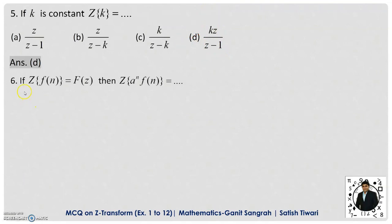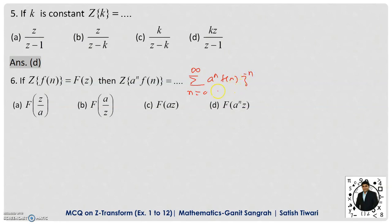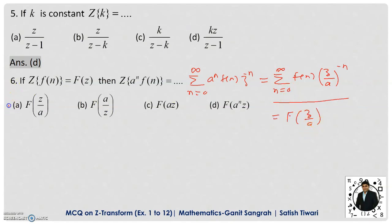Question 6: If Z{f(n)} = F(Z), then Z{A^n · f(n)} is given by — this is a very important formula called the change of scale property, also called the damping rule. By definition, Z{A^n · f(n)} = summation from n=0 to infinity of A^n · f(n) · Z^(−n) = summation of f(n) · (Z/A)^(−n), which by definition equals F(Z/A). So option A is the correct answer.